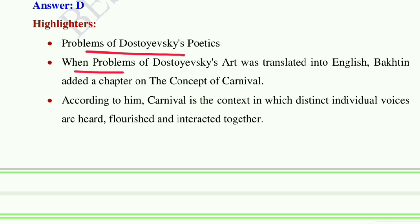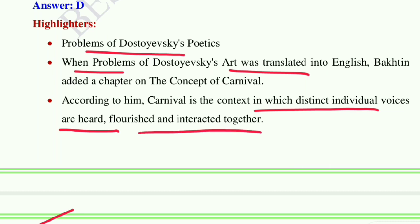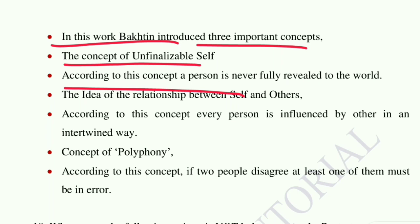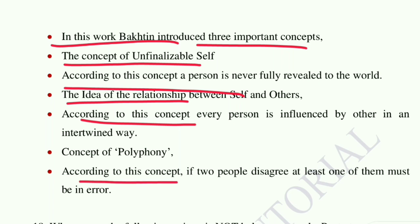In Problems of Dostoevsky's Poetics, when translated into English, Bakhtin added a chapter on the concept of carnival. According to him, carnival is the context in which distinct individual voices are heard, flourish, and interact together. In this work, Bakhtin introduced three important concepts: the concept of the unfinalizable self — a person is never fully revealed to the world; the idea of the language between self and others — every person is influenced by another in an intertwined way; and the concept of polyphony — if two people disagree, at least one of them must be in error.